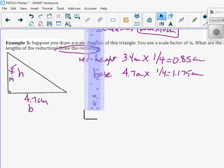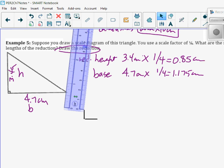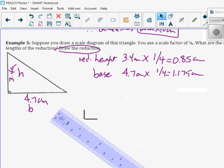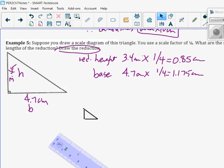This is hard to do with my smart board, but we'll get her done. And we should label it as well. So this is 1.175 centimeters, and this is 0.85 centimeters. And that is reductions.